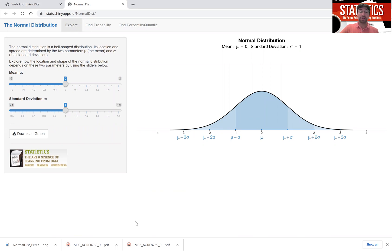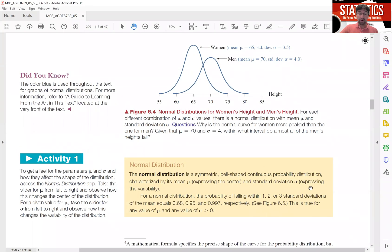Now let me quickly remind you what the normal distribution is. I'm going to go to a page in my textbook which says the normal distribution is a symmetric bell-shaped distribution, as you've seen in the app, that is characterized by its mean mu which expresses the center of the distribution and the standard deviation sigma which expresses the variability of the distribution. Now one important property of the normal distribution is that the probability of falling within one, two, or three standard deviations of the mean equals 68%, 95%, or 99.7% respectively.